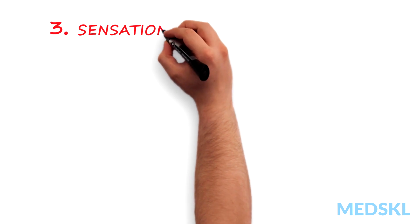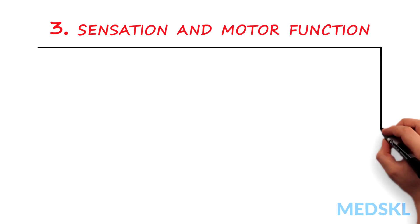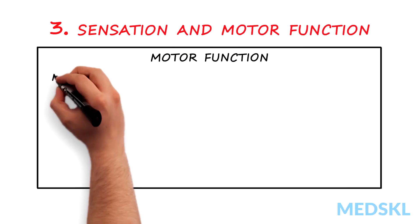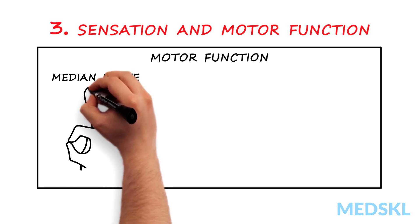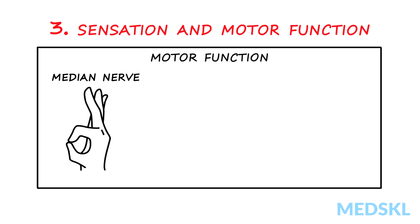Third, sensation and motor function. For motor function, check the following. First, the median nerve, also known as the tea-drinking nerve. Test by checking the OK sign. Ask the patient to touch the tip of the index finger to the tip of the thumb.